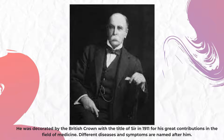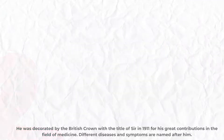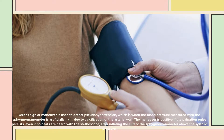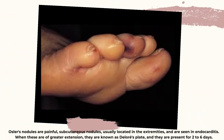Different diseases and symptoms are named after him. The Osler maneuver is used to detect pseudo-hypertension, which is when the blood pressure measured with the sphygmomanometer is artificially high due to calcification of the arterial wall. The maneuver is positive even if no heartbeat is heard with the stethoscope after the cuff of the inflated sphygmomanometer is above systolic pressure. Osler nodes are painful subcutaneous nodules usually located in the extremities and are seen in endocarditis.